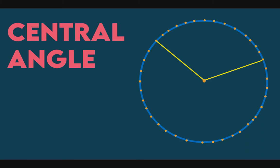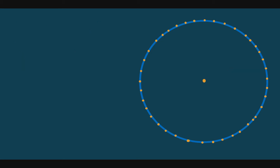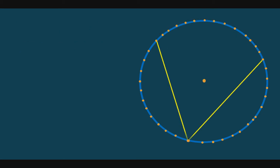Next, central angle. When we say central angle, its vertex is at the center. And the measure of the central angle is equal to the measure of its intercepted arc. When we say intercepted arc, that means it is the arc that the angle covers. So we have here this arc — this is the intercepted arc of this angle. Again, arc is a part of the circumference.